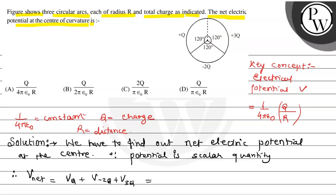Now putting in the values: 1 upon 4 pi epsilon 0, q by r minus 2q by r plus 3q by r. So when you do the calculation, you will get 2q upon 4 pi epsilon 0 r.